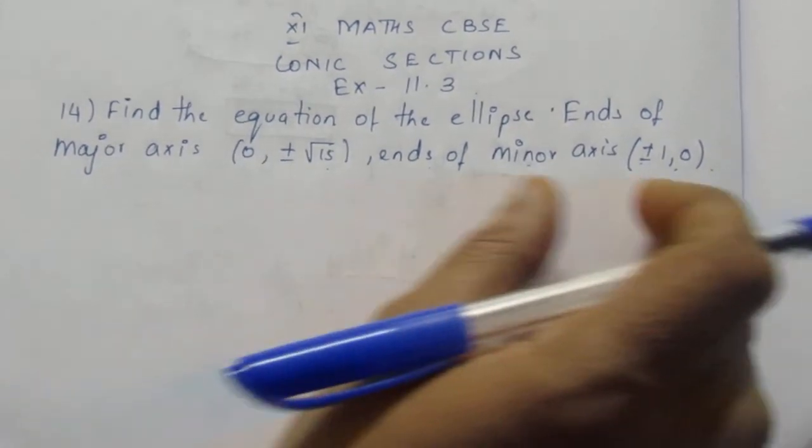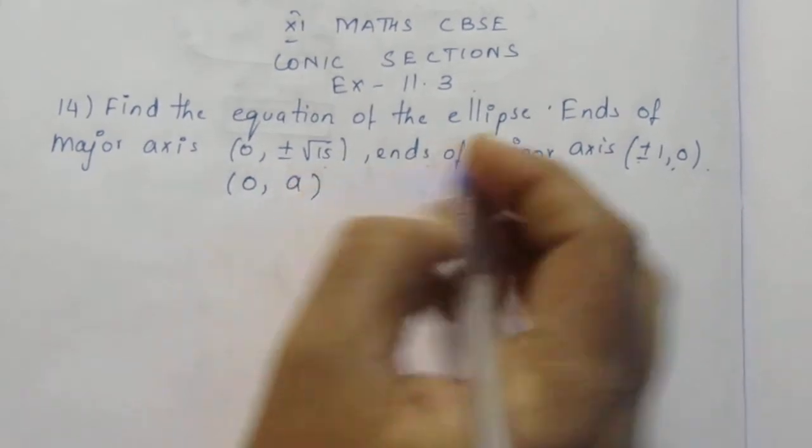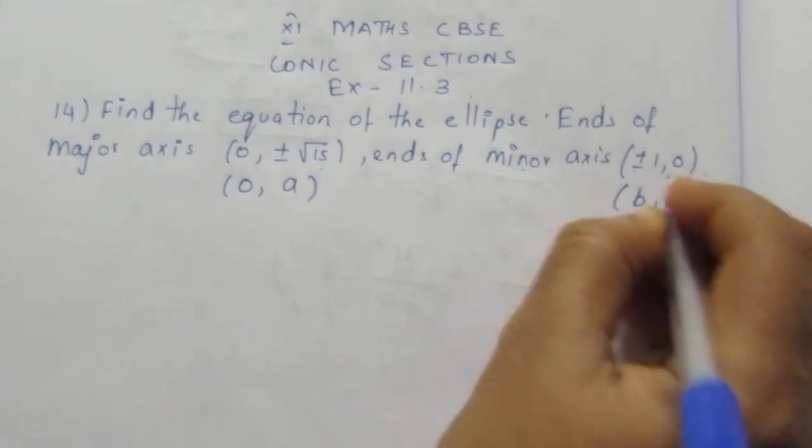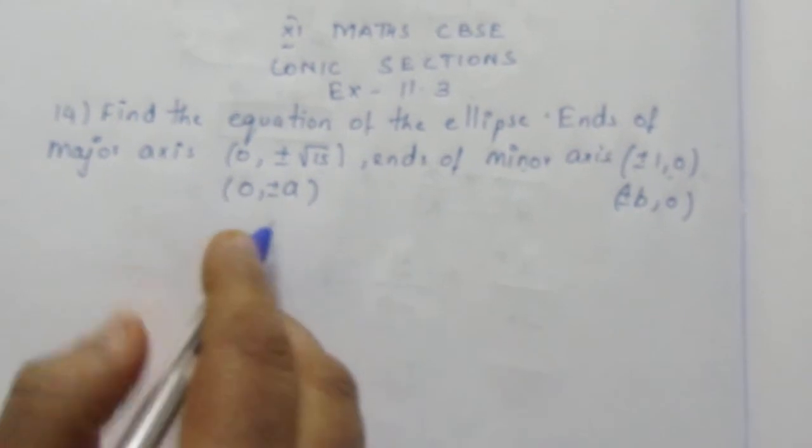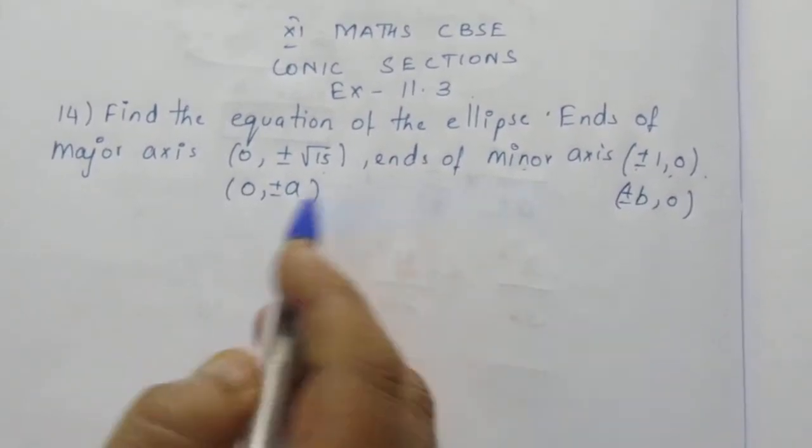Here they have given major axis and minor axis. The major axis endpoints are at (0, ±a) and minor axis endpoints are at (±b, 0). So they have given the ends.